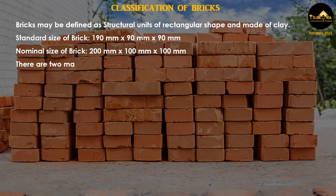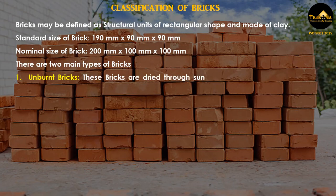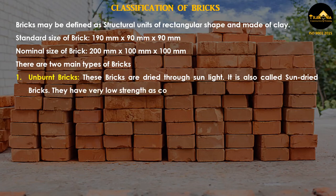There are two main types of bricks. Unburnt bricks are dried through sunlight and are also called sun-dried bricks. They have very low strength compared to other types of bricks.